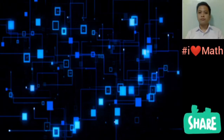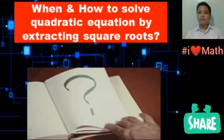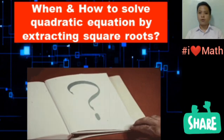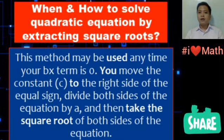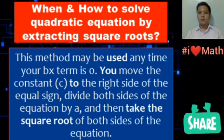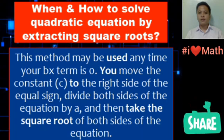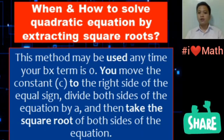When and how to solve a quadratic equation by extracting square roots: this method may be used any time your bx term is 0. You move the constant to the right side of the equal sign, divide both sides of the equation by a, and then take the square root of both sides of the equation.